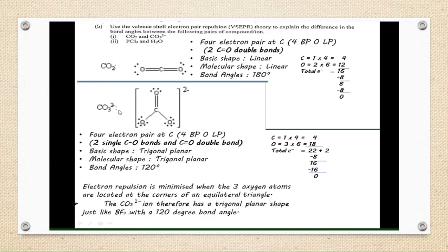This is the Lewis structure for CO2. We recognize the bonding pairs and lone pairs and calculate the electrons. CO2 has no lone pairs on the central atom, so the molecular shape is linear and the bond angle is 180 degrees.